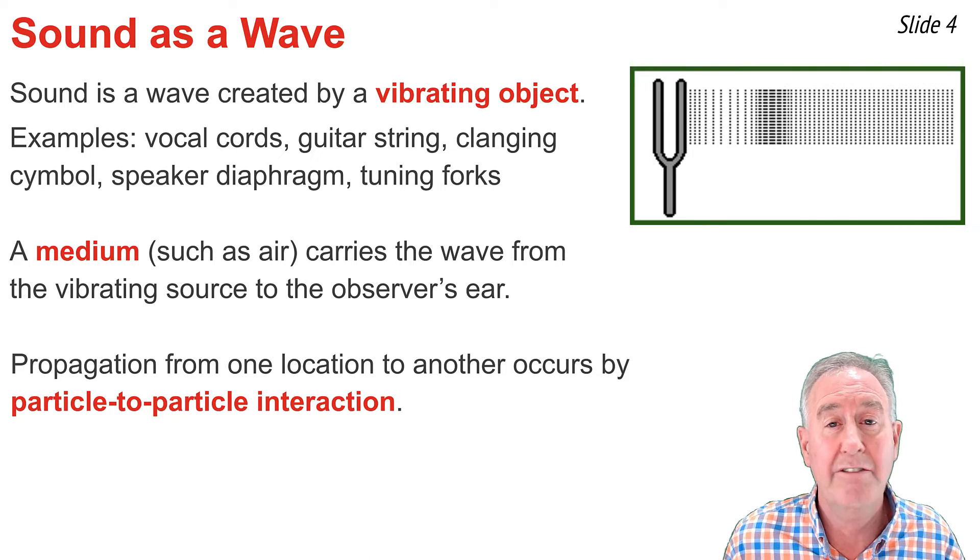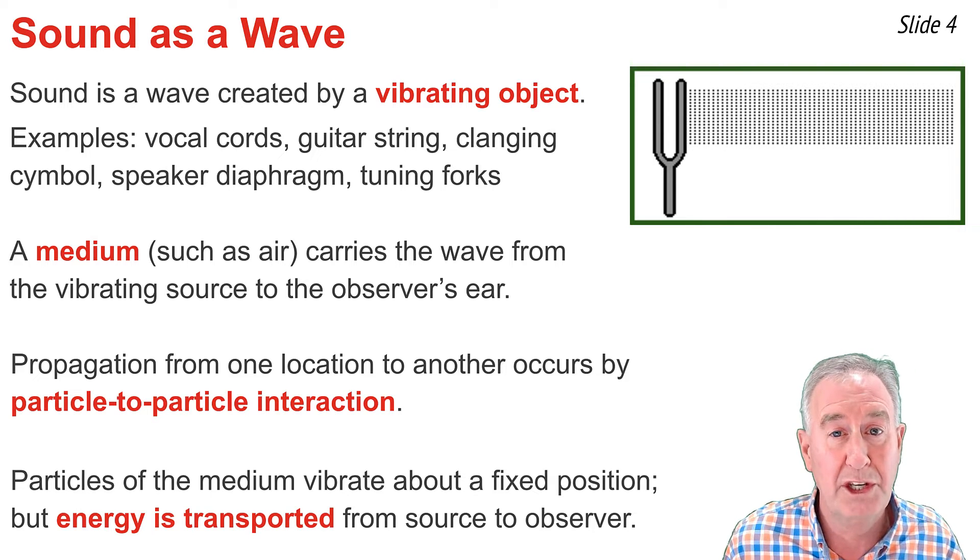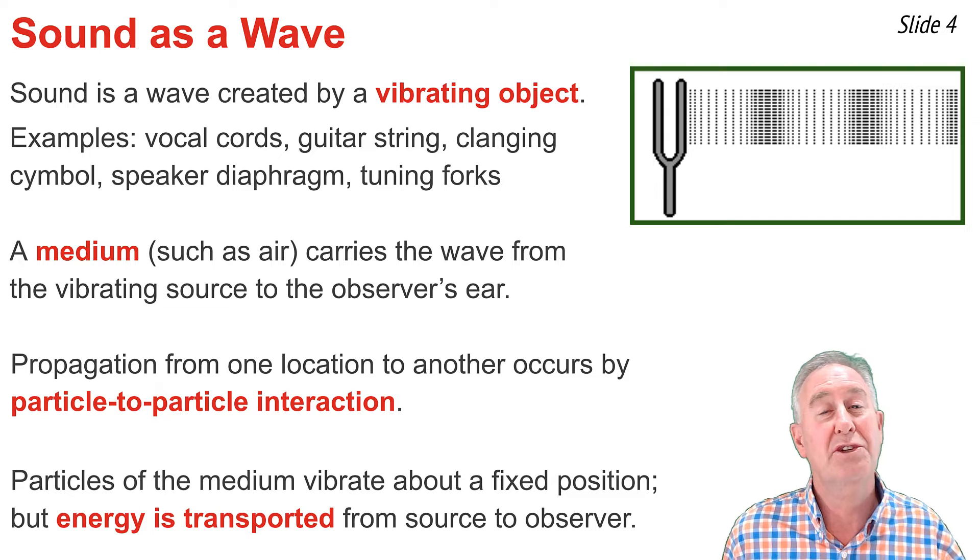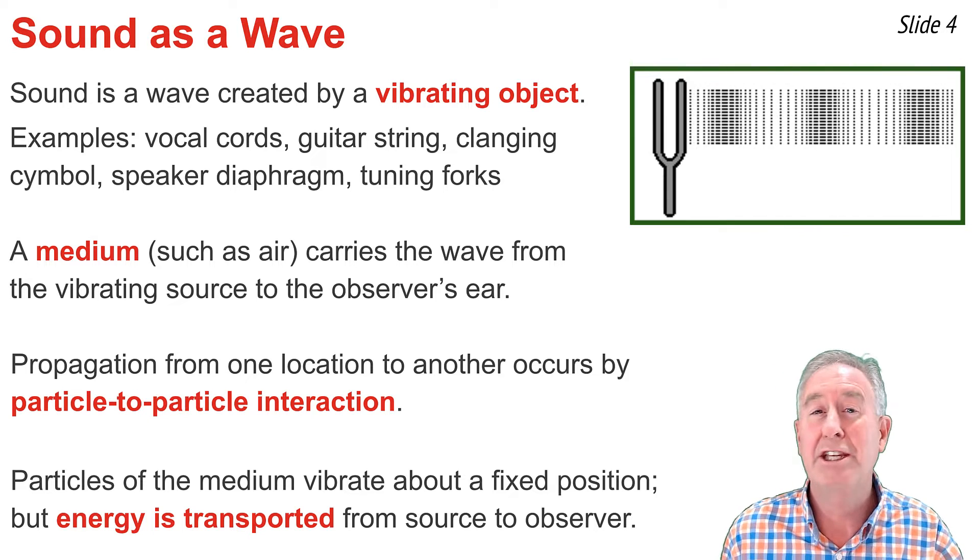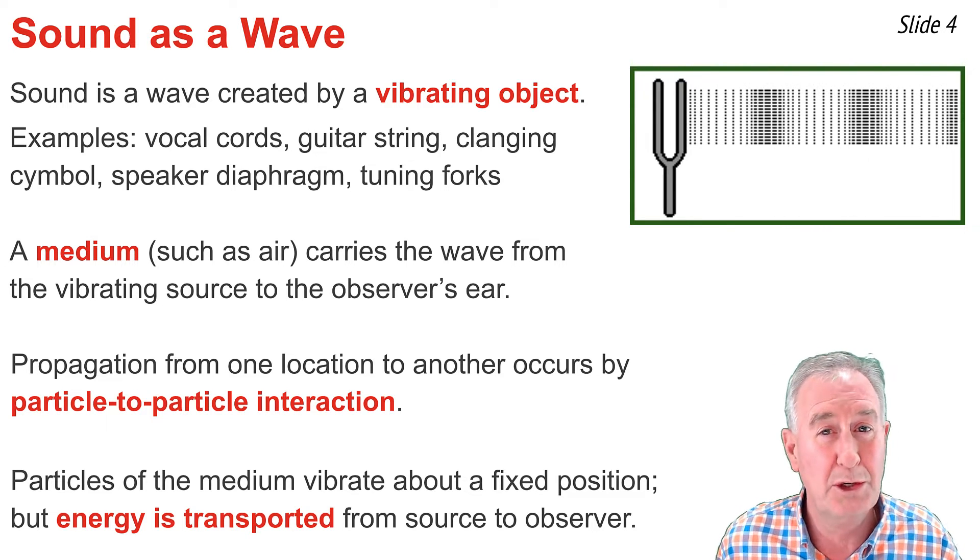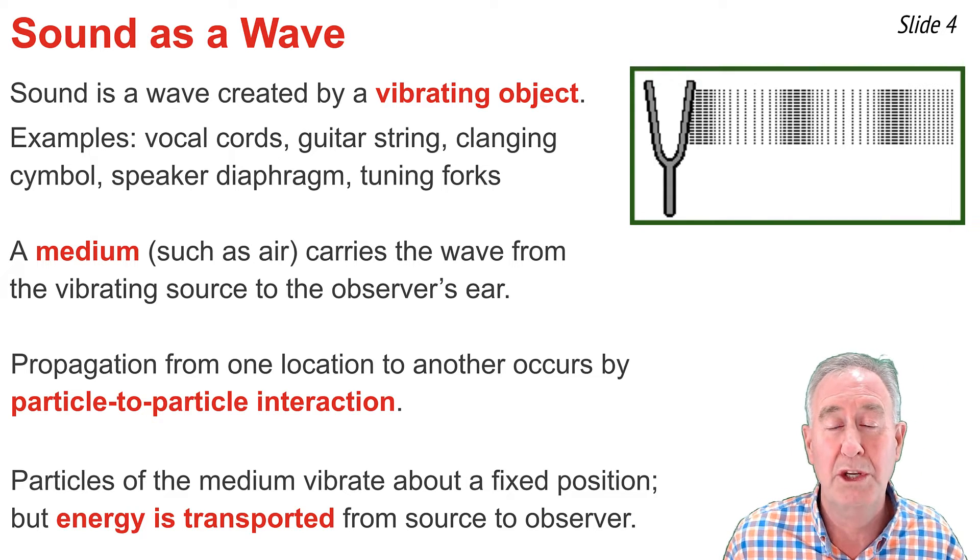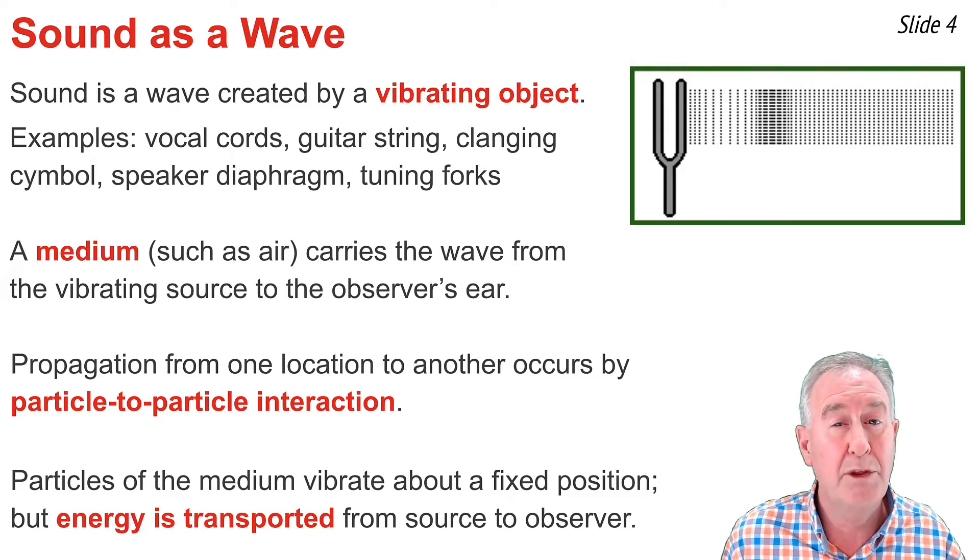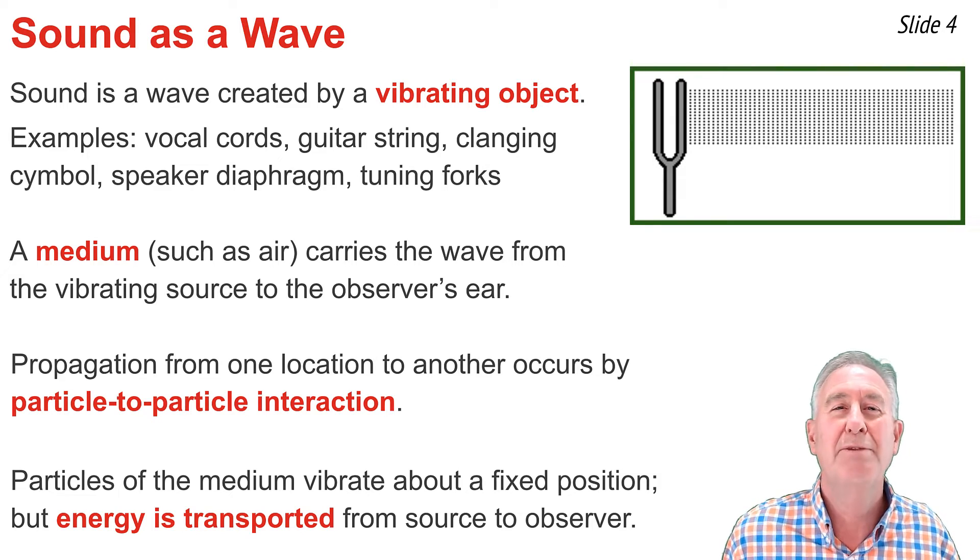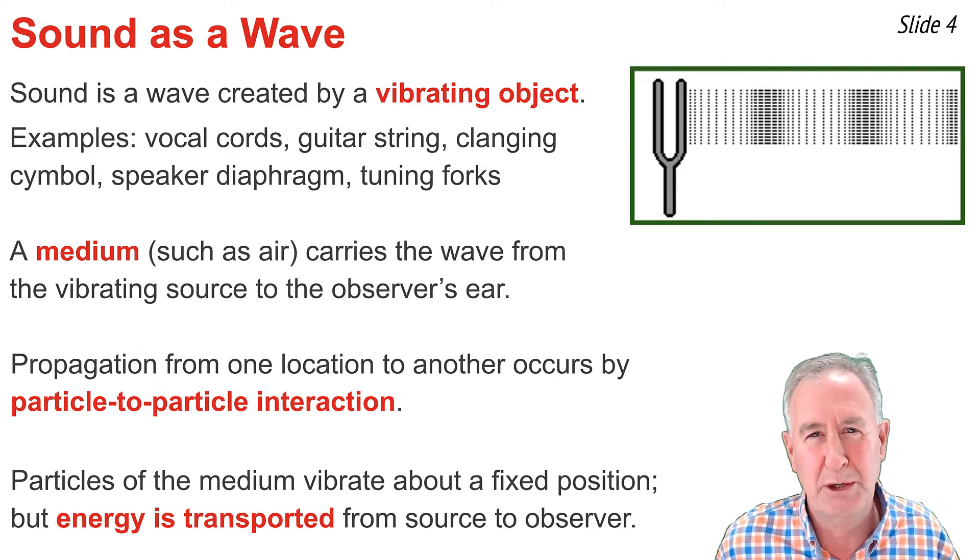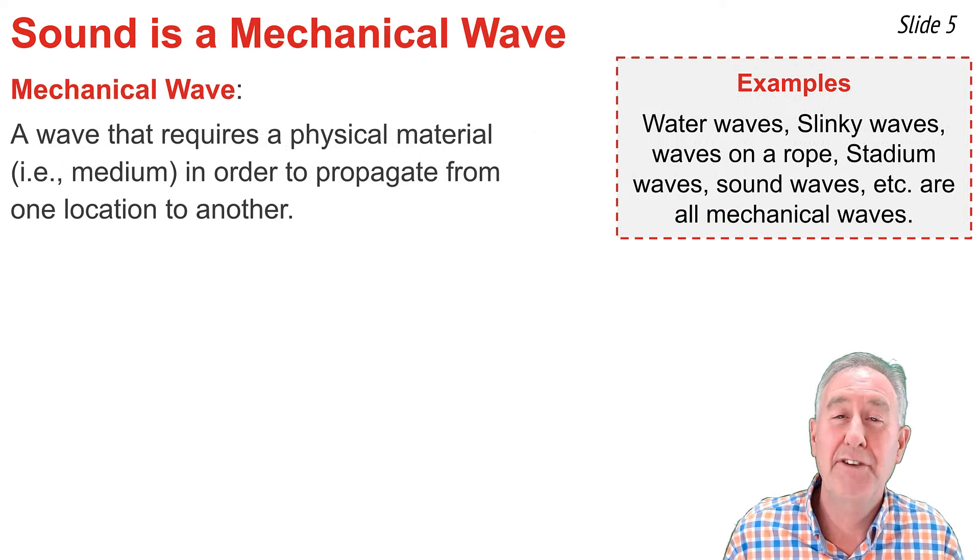A particle of air vibrates about a fixed position, and as it does, it sets its neighboring air particle into back-and-forth vibrational motion, which in turn sets the next particle into back-and-forth vibrational motion, causing the energy of the wave to be transported from the source to the observer.